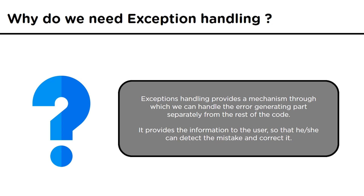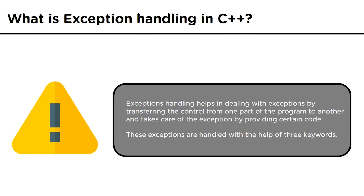Exception handling helps in dealing with exceptions that disrupt the flow of execution of a program. When an exception is encountered, it transfers control from one part of the program to another, known as handlers. This makes the code more readable and maintainable and takes care of the exception by providing certain code.